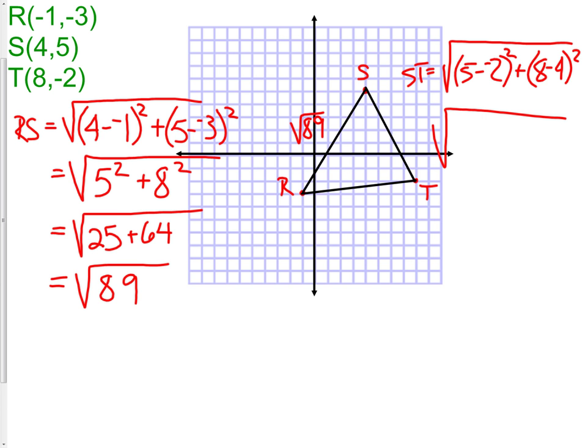This gives us 7² + 4², which gives us 49 + 16, which is 65. We now know that ST is √65.